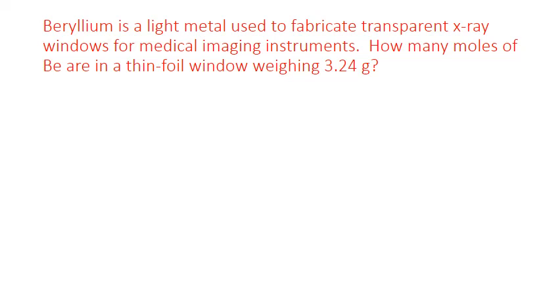So just like any dimensional analysis problem, we'll begin with what we're given as a starting point in the problem. So we're told that we have a foil window that is 3.24 grams of beryllium. That's our starting point. We also need to know what our final unit should be. And the question asks how many moles of beryllium are in that window. So that's what we're trying to find.